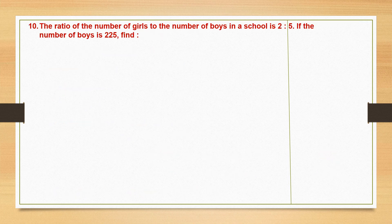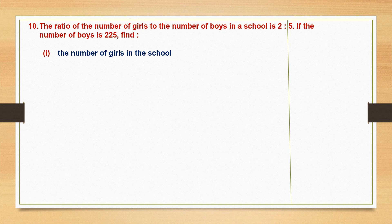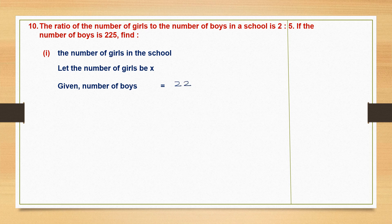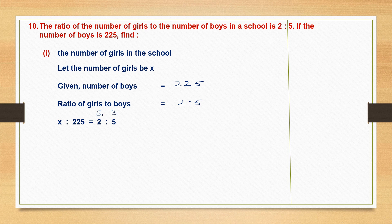The ratio of the number of girls to the number of boys in the school is given as 2 is to 5 — girls first and then boys, so we have to be careful. If the number of boys is 225, find the number of girls in the school. Whenever we are asked to find something, we assume it is x. So let the number of girls be x. Number of boys is given as 225. Ratio of girls to boys is 2 is to 5. We form a proportion: girls is to boys on the right-hand side, so on the left also we have girls is to boys — x is to 225.